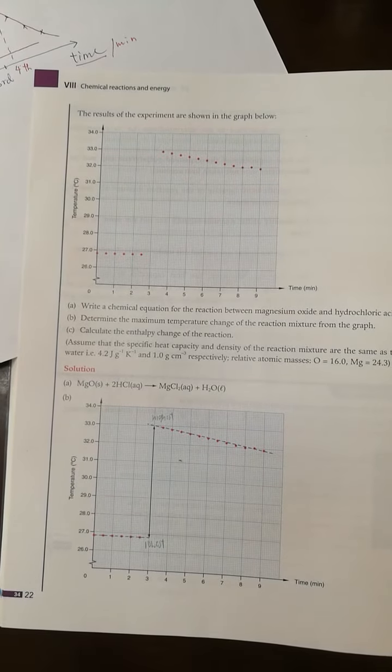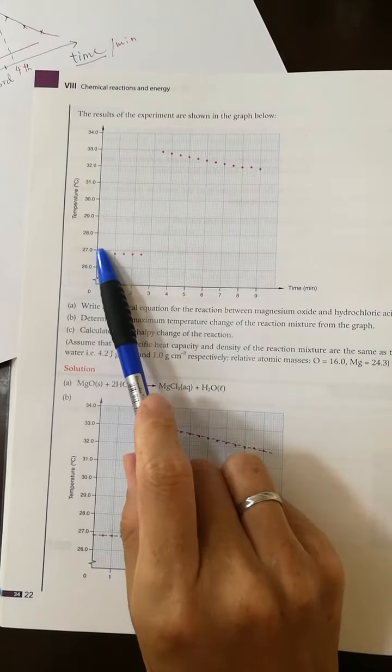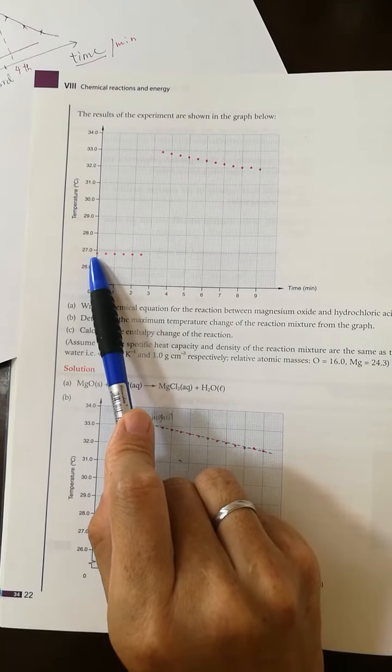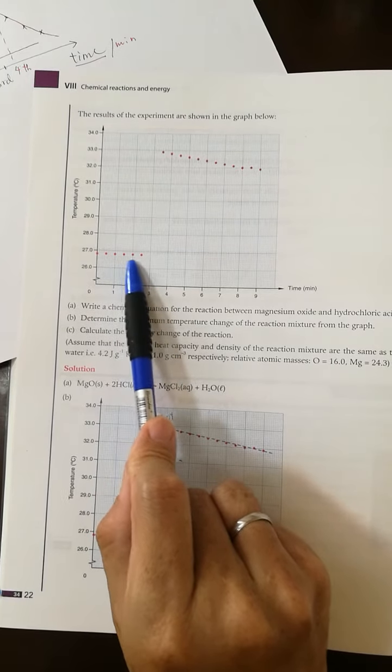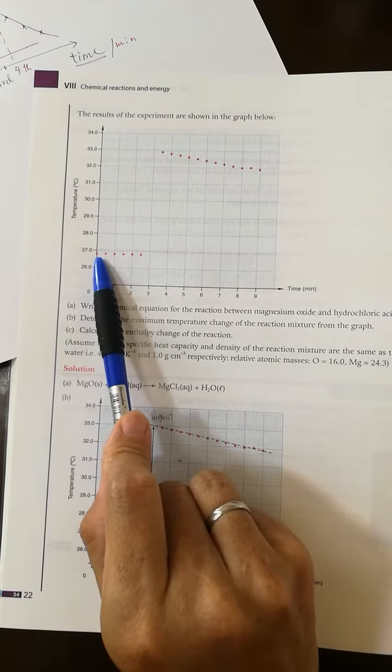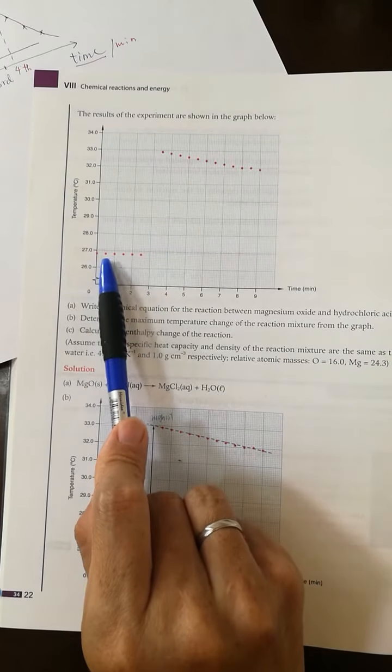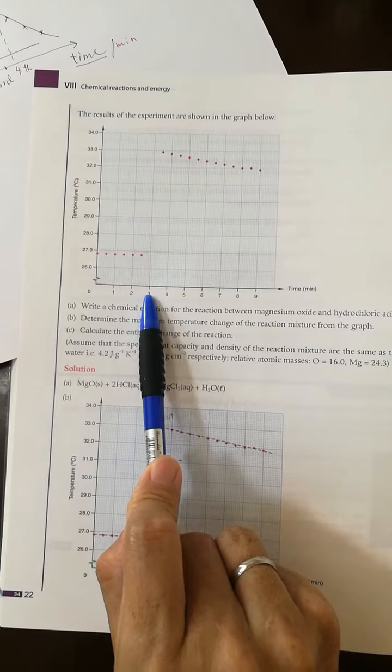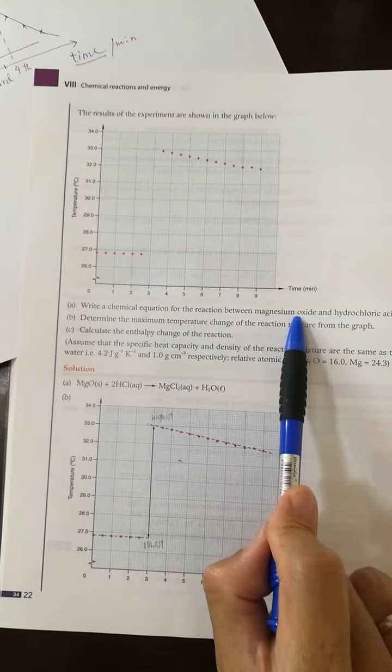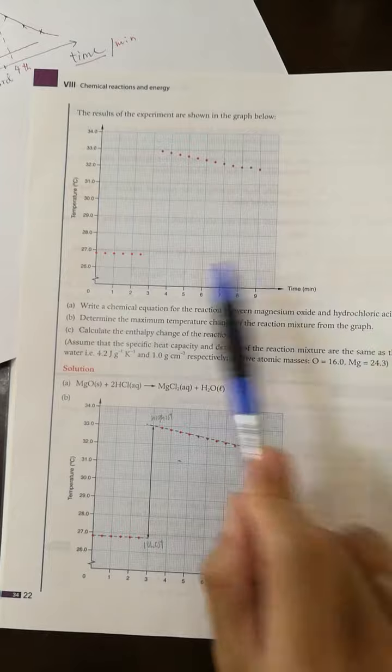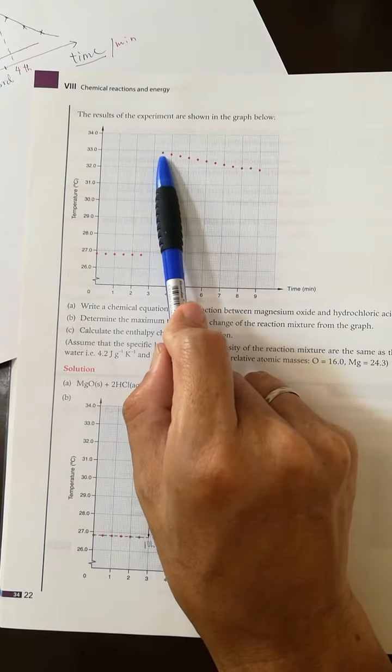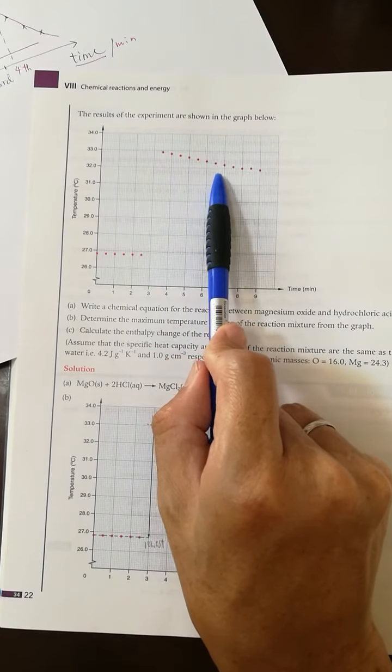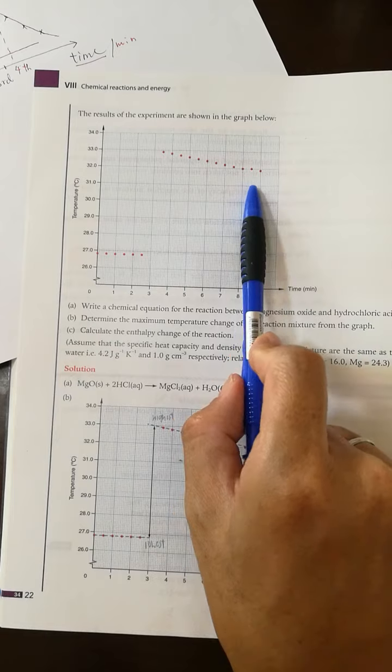How to get the delta T from the graph: you do the experiment by measuring the temperature of the acid at different times, every 30 seconds. Then at the third minute you mix the magnesium oxide and HCl together, and after the third minute you can measure the temperature.